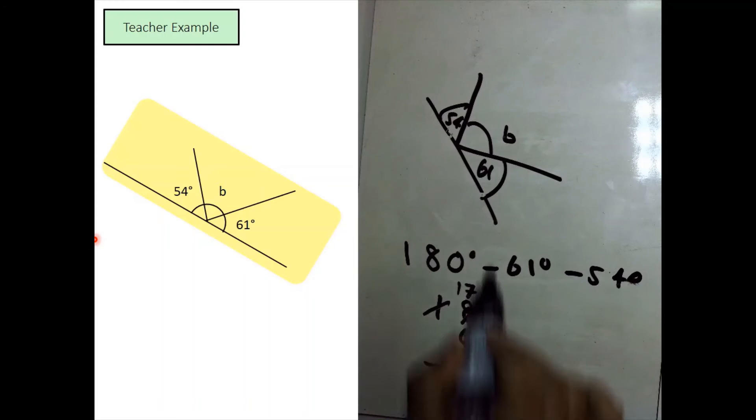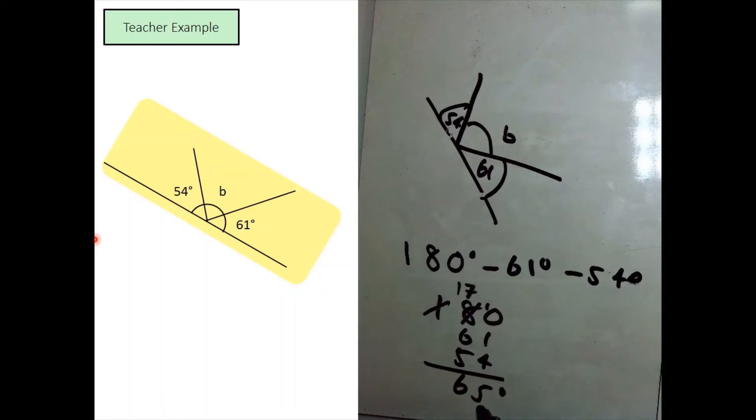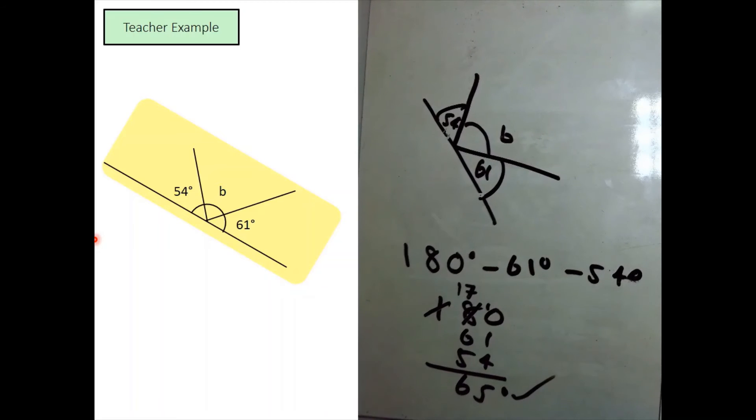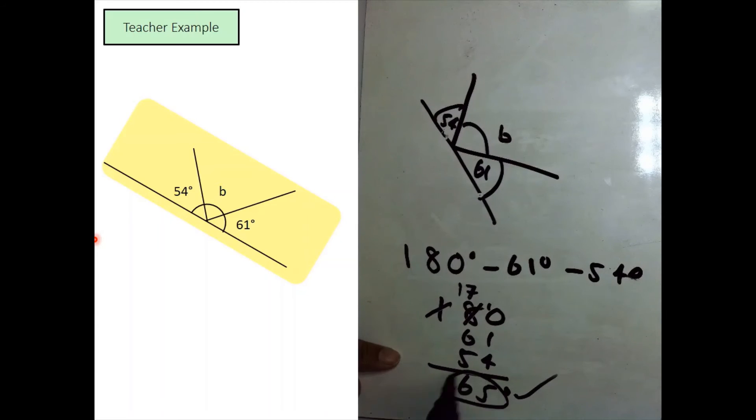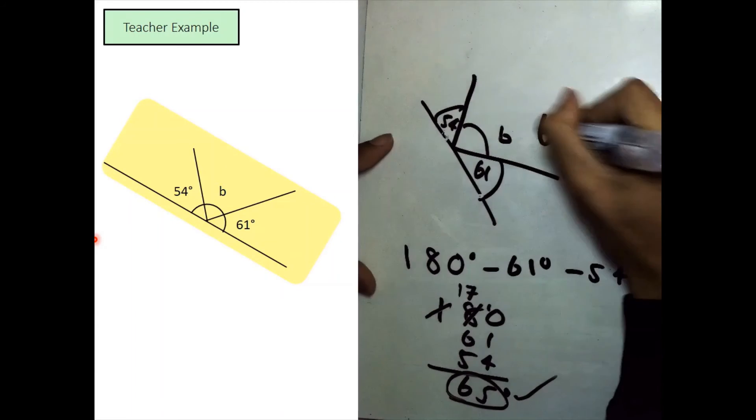We can check if we're right by doing 65 add 61, which should be 126. Add another 54. And yes, that does equal 180. Therefore, this missing angle over here is 65 degrees.